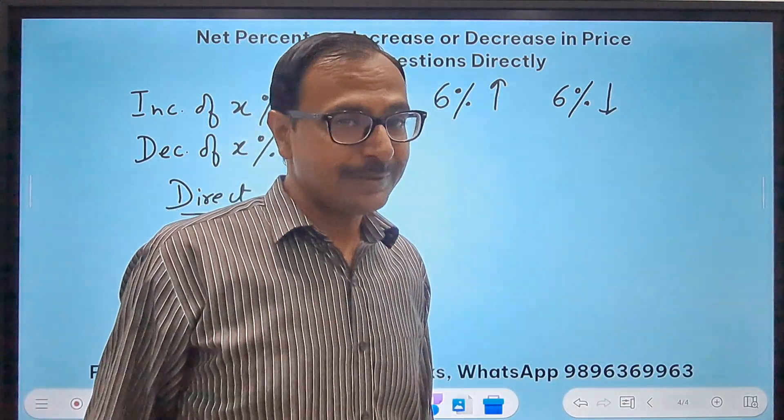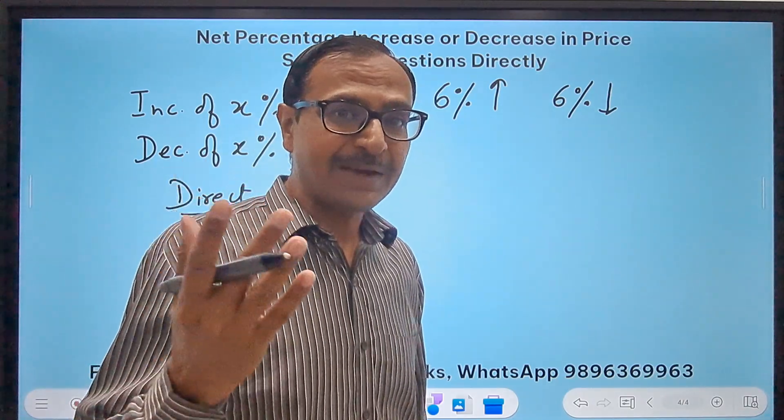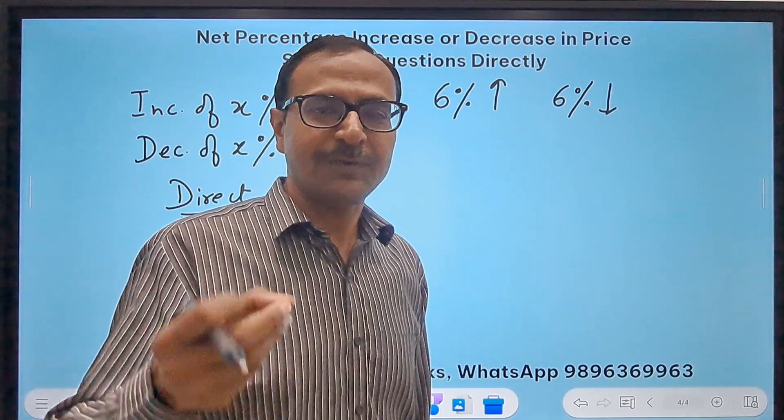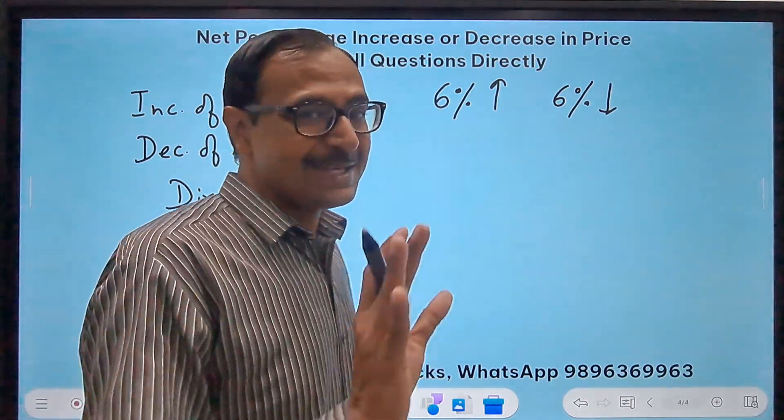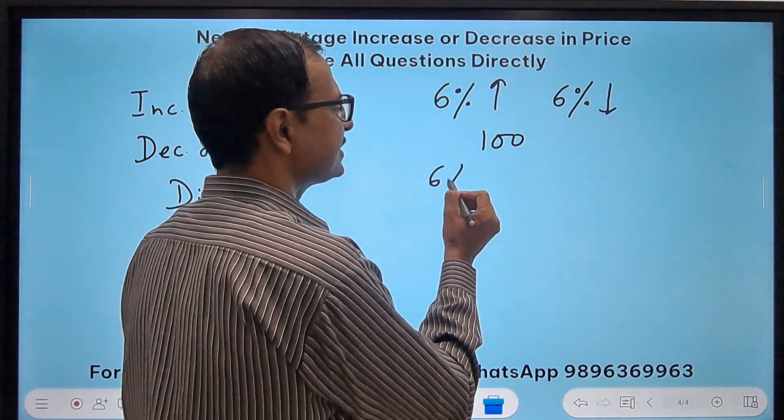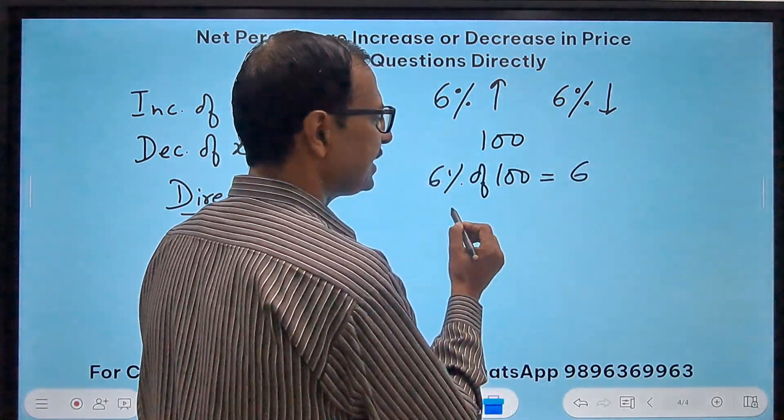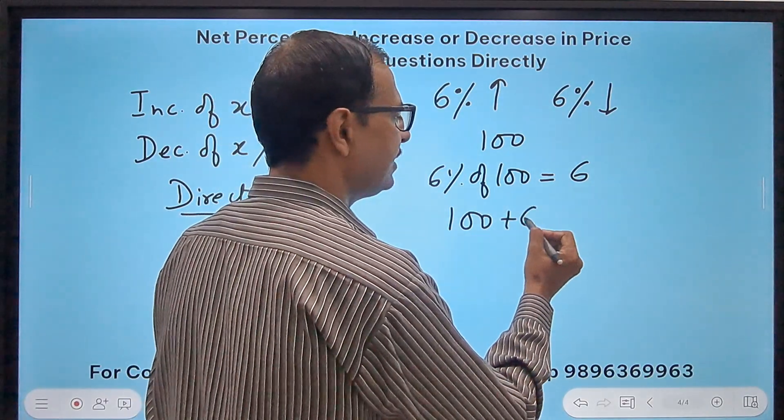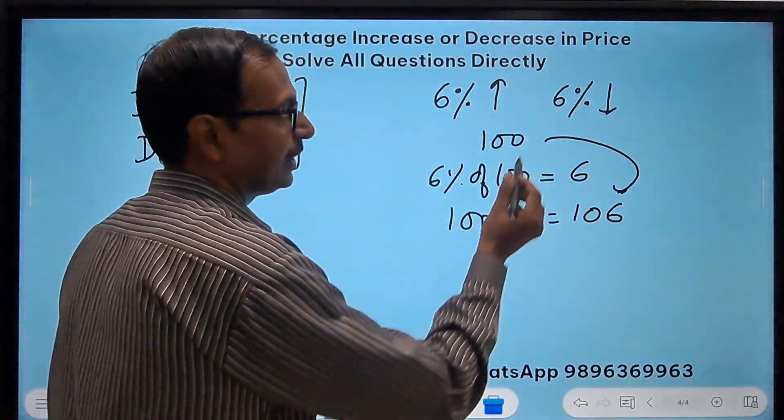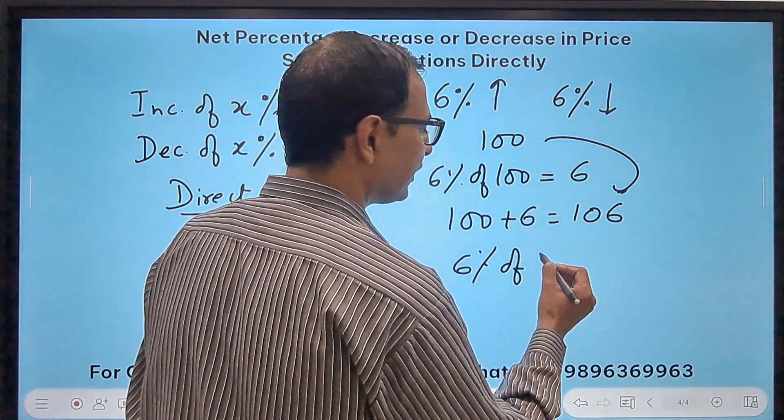Now, guess what? The answer which most students will think: 6 percent increase then 6 percent decrease, so no change. That is the worst answer we can get actually. Let's see how. 100 is the initial price, so 6 percent of 100 is 6 increase, so 100 becomes 106. After first increase of 6 percent, now 6 percent decrease. But 6 percent of what? It is 106. Now this is important: 6 percent of the second quantity, and 6 percent of 106 is 6.36.